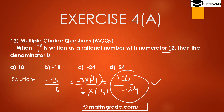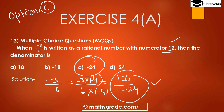So 12 divided by -24 is the rational number with numerator 12 and denominator -24. Therefore option C is the correct answer.